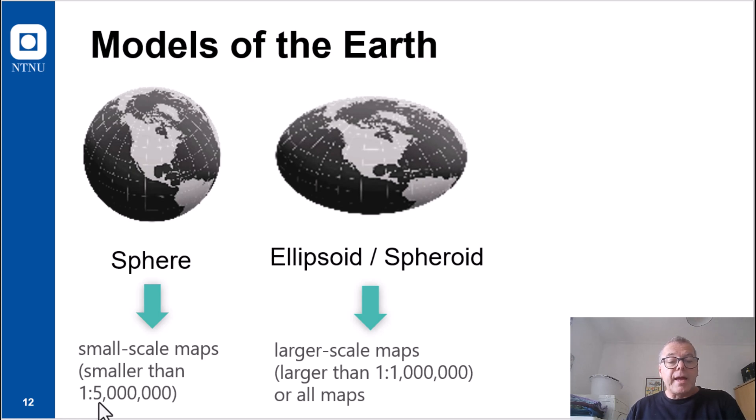However, to maintain accuracy for large scale maps, that is, maps that have a scale larger than 1 to 1 million, a spheroid, or an ellipsoid, is needed to represent the shape of the earth accurately.